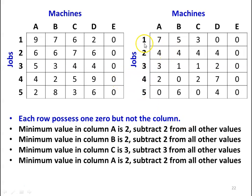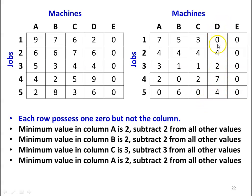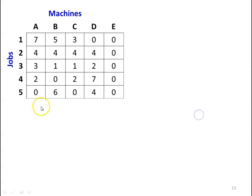Now we check the values. The first row has 2 zeros. All 5 rows have a zero. Column A has 1 zero, column B has 1 zero, column C has 1 zero, column D has 1 zero. Now we have to make the assignment. Here is the matrix again.